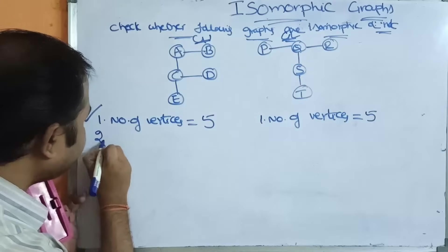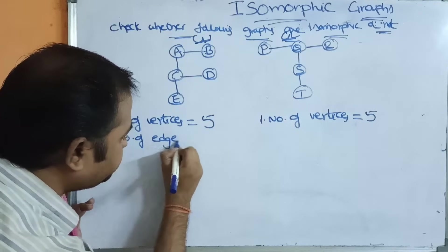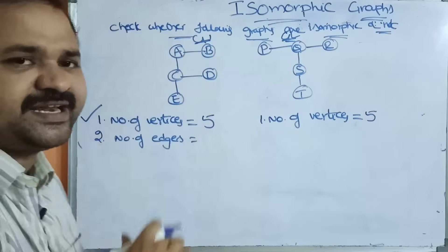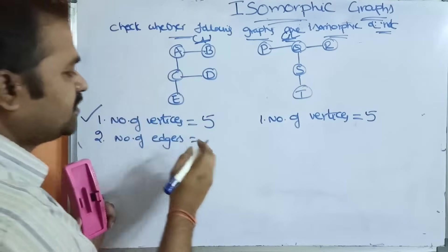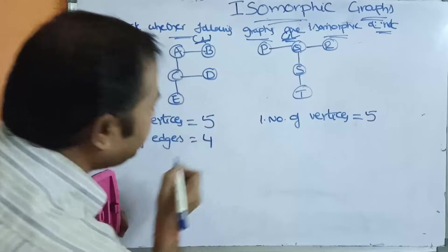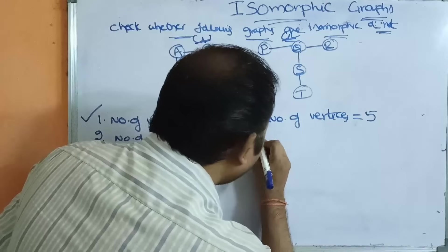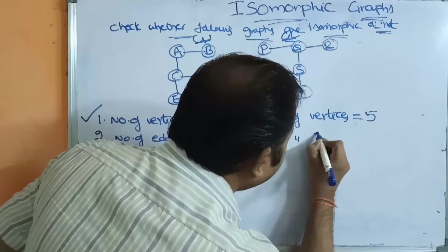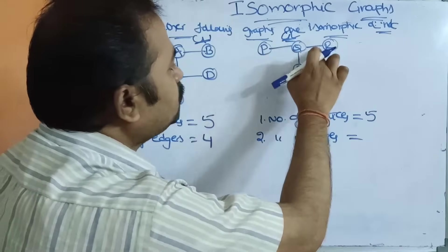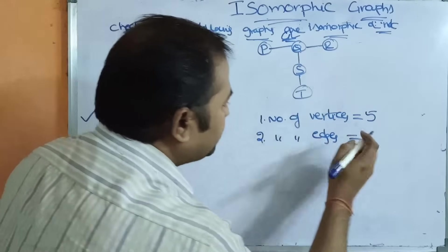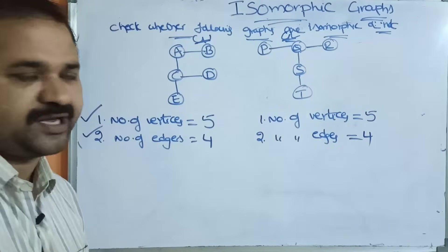The second condition is to find out the number of edges. Graph one has four edges. An edge means the connection between two nodes. Graph two also has four edges. So the number of edges in both graphs is the same.